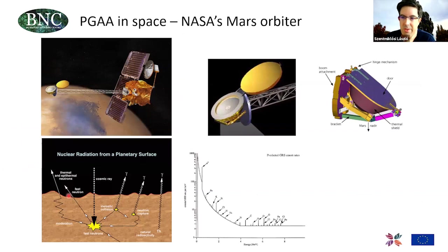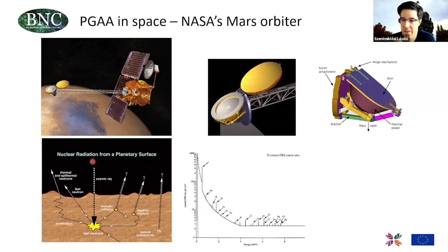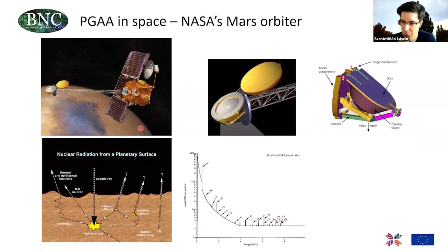As a curiosity, PGA is not only available on Earth but also in space, as more and more orbiters are equipped with gamma detectors to map the elemental composition of Mars and other planets. The excitation is done by cosmic radiation reaching the planet surface and creating nuclear reactions, which produce gamma radiation detected by the orbiters. Based on gamma spectra recorded during the flyby of these orbiters, scientists can reconstruct the abundant elements in the surface of distant objects like Mars.